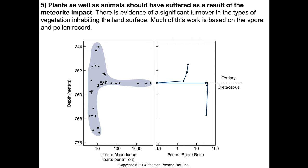Number five: plants as well as animals should have suffered as a result of the meteorite impact. There is very significant evidence of turnover in the types of vegetation inhabiting the land surface. Unlike the Devonian, we now have tens of thousands of species of land plants, and much of this work is based on spore and pollen research. The iridium abundance spikes right at the boundary, and the pollen-to-spore ratio changes dramatically at that same boundary. The pollen goes away; the spores come back first. The opportunists — the pioneering species — are spore producers as opposed to pollen producers. Most of the flowering plants, the angiosperms, got knocked down at the end of the Cretaceous period.